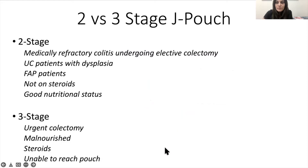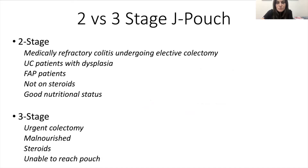The common ways that we do a J-pouch operation — the standard operation for patients with ulcerative colitis, some patients with Crohn's disease, and patients with familial polyposis — is that we may do it in two or three stages. Disclaimer: some surgeons do this in one stage, and I'll explain later why I think this is too risky and not something that I do.